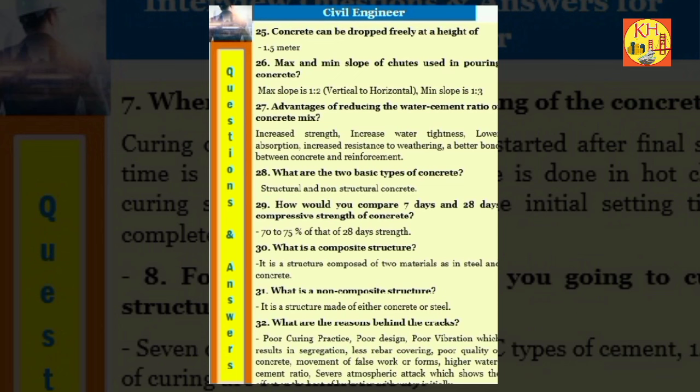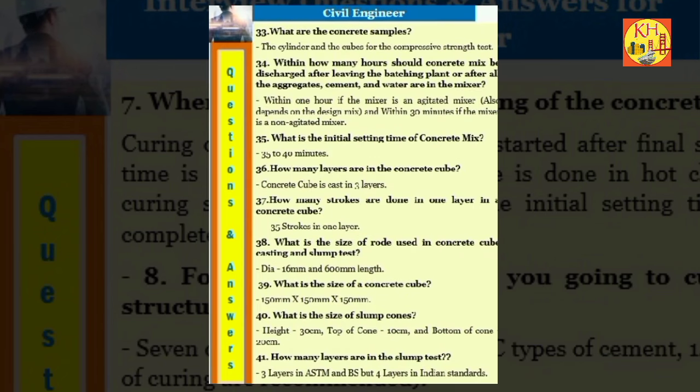Question 32: What are the reasons behind the cracks? Poor curing practice, poor design, poor vibration which results in segregation, less rebar covering, poor quality of concrete, movement of false work or forms, higher water cement ratio, severe atmospheric attack which shows the effect on the heat of hydration with water initially. Question 33: What are the concrete samples? The cylinder and the cubes for the compressive strength test.